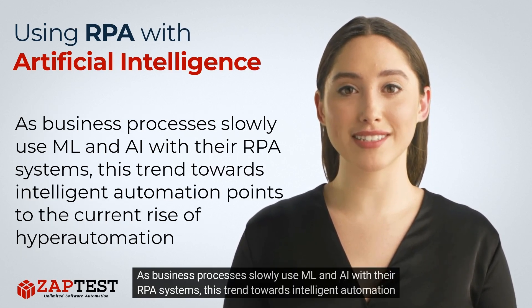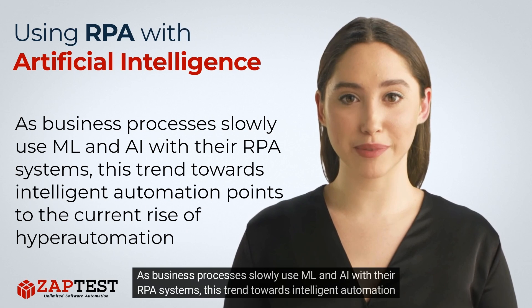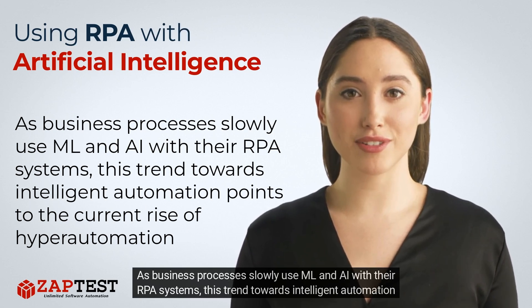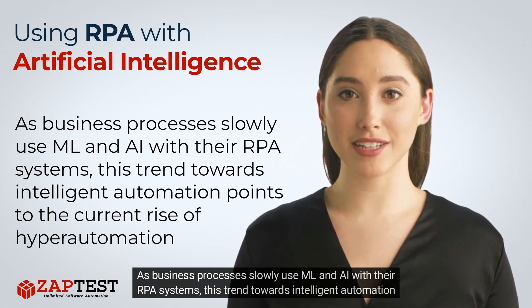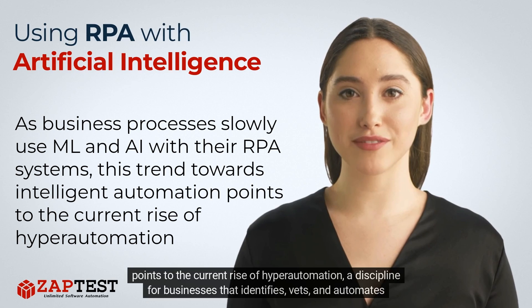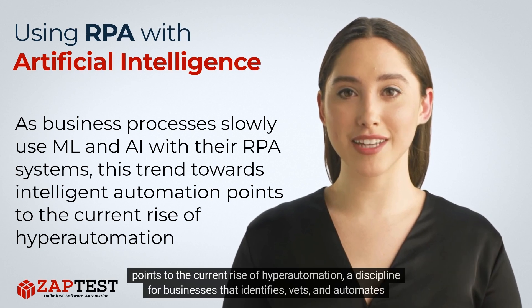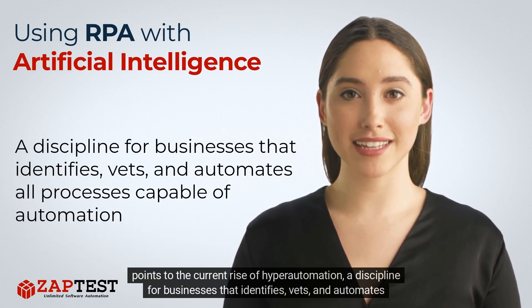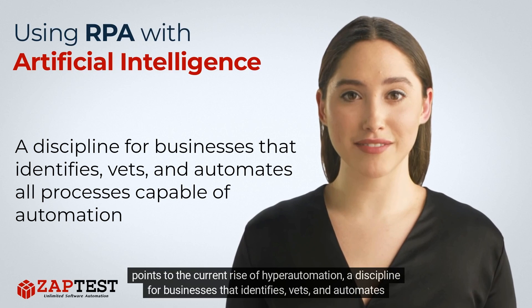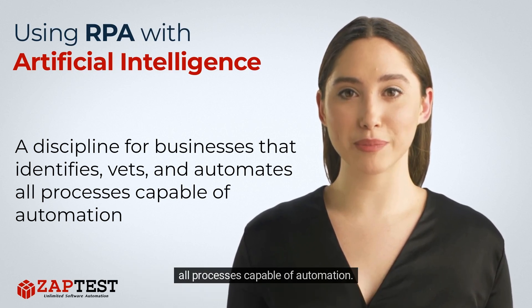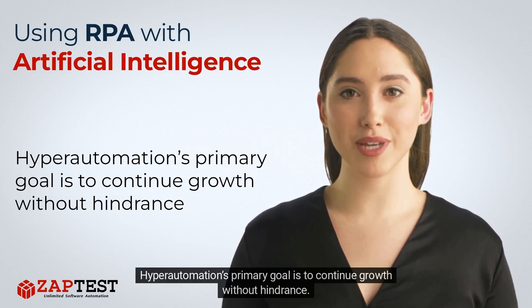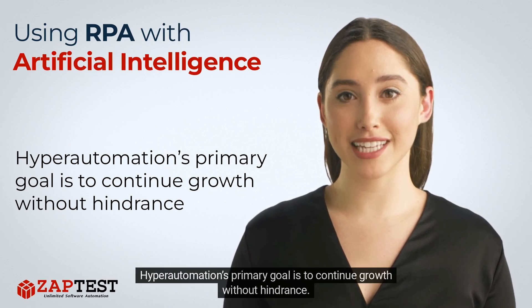As business processes slowly use ML and AI with their RPA systems, this trend towards intelligent automation points to the current rise of hyperautomation — a discipline for businesses that identifies, vets, and automates all processes capable of automation.